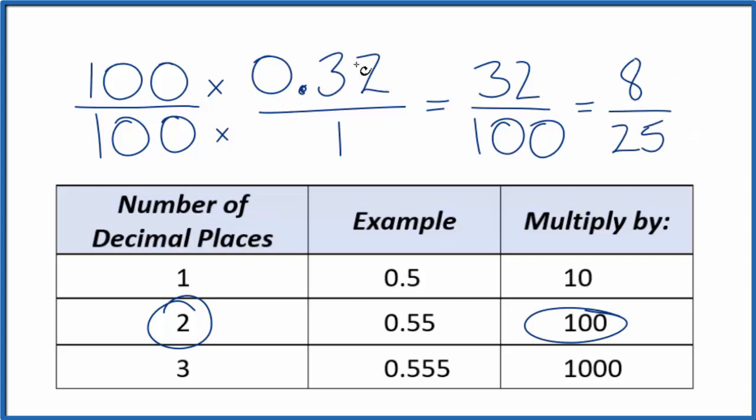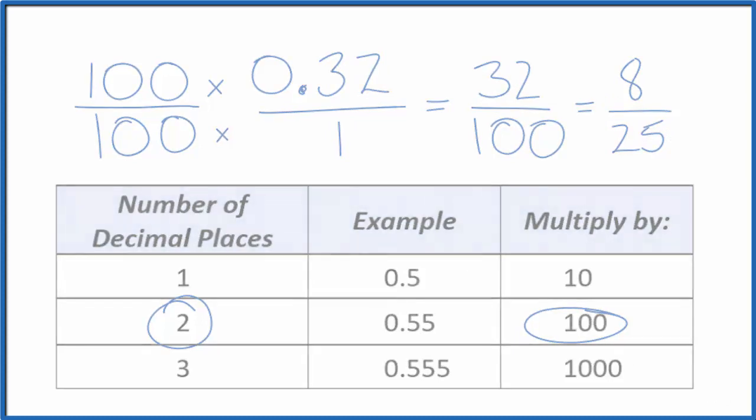If you divide 8 by 25, or 32 by 100, you get 0.32. This is Dr. B, and thanks for watching.